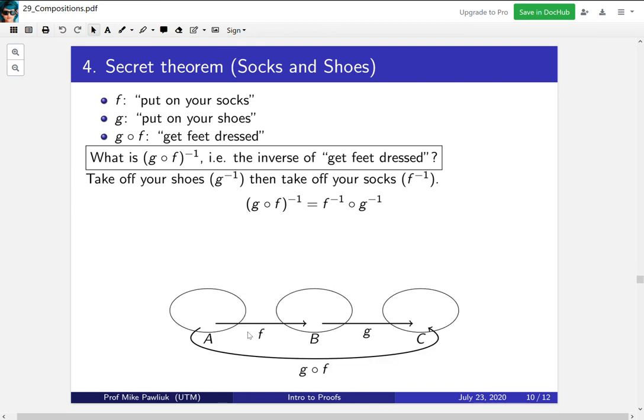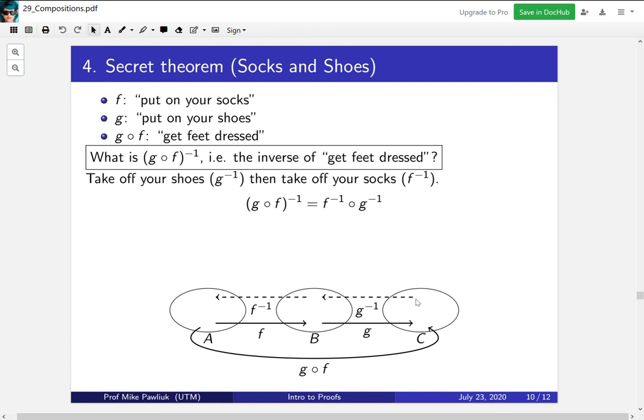So this idea is called the socks and shoes principle. Let's take a look at the diagram. So F goes from A to B, and G goes from B to C, and then the composition goes from A to C. So let's write out each of these inverses. Here's the inverse of F, goes this direction. Here's the inverse of G, goes this direction. And then G composed with F, its inverse will go from C all the way to A. So here's G composed with F, inverse. So it really looks like if you're trying to do this, if you're trying to go from here over here, one way to do it would be to do G inverse and then do F inverse, just like we said. If you first tried to apply F inverse, then you'd be stuck, there'd be nowhere to go.